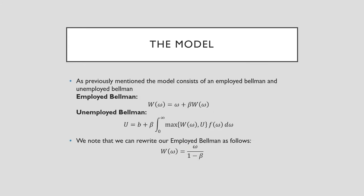Now, as previously mentioned, the model consists of two equations: an employed Bellman and unemployed Bellman. The employed Bellman is W(omega) = omega + beta*W(omega). And the unemployed Bellman is U = b + beta times this integral from zero to infinity, which is the maximum of whether there is a higher value from being employed or unemployed times this CDF integral. This is just a probabilistic interpretation, meaning that these values are on a distribution.